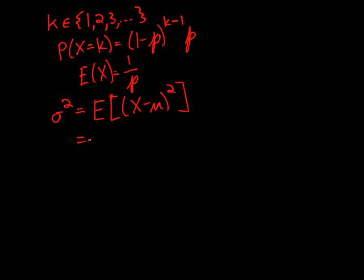So that means we sum over all the possible values of the random variable. In this case, I'm going from 1 to infinity of that value k minus the mean, in this case 1 over p.